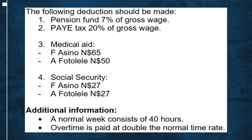The following deductions will be made: pension fund at 7% of gross wage; PAYE at 20% of gross wage; medical aid for F. Asino is N$65, while for A. Fotolele it is N$50; social security for F. Asino is N$27, while for A. Fotolele is also N$27. Additional information: a normal week consists of 40 hours, and overtime is paid at double the normal time rate.